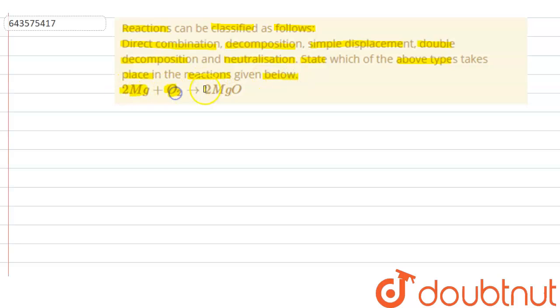2Mg plus O2 gives 2MgO. So, in this question, a reaction is given. 2 magnesium combines with oxygen to form 2MgO that is magnesium oxide.